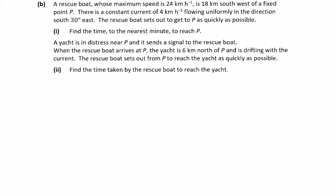So 2019, I'll try and do this slightly different from my previous attempt. The rescue boat max speed is 24, 18 kilometers south west of a fixed point P. Here's my diagram: a rescue boat, point P, and we have 18 kilometers. There's a constant current of 4 kilometers an hour, so if you call that 4t, in one hour it's going to go 1, in two hours 8, flowing uniformly in the direction. They use this south 30 degrees east type terminology. So here's south, south 30 degrees east, so I go south first and then east. The current is flowing down that way.